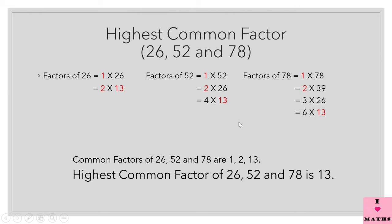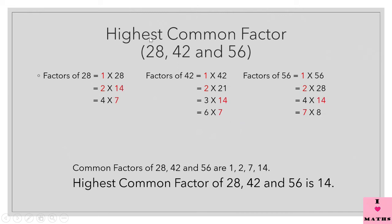Let us take one more example. We are going to find out the HCF — remember it is popularly called HCF — of 28, 42 and 56. Factors of 28: 1 × 28 = 28, 2 × 14 = 28, 4 × 7 = 28. Factors of 42: 1 × 42 = 42, 2 × 21 = 42, 3 × 14 = 42, 6 × 7 = 42.